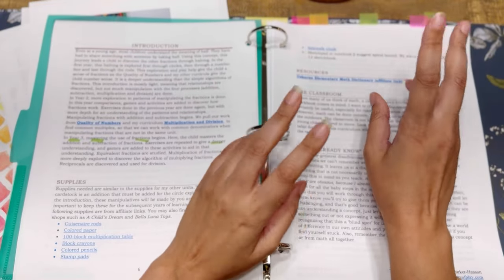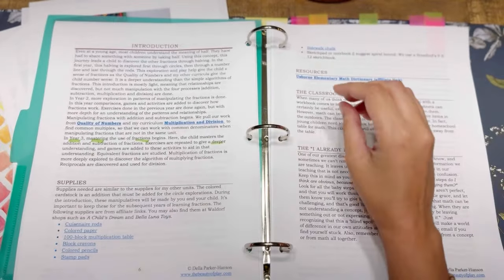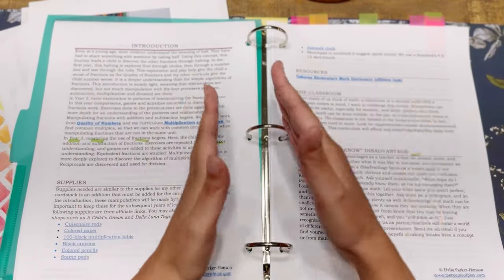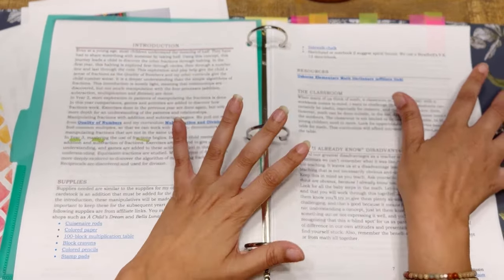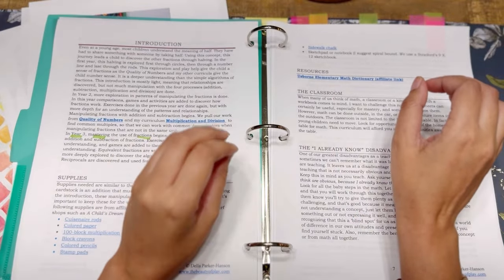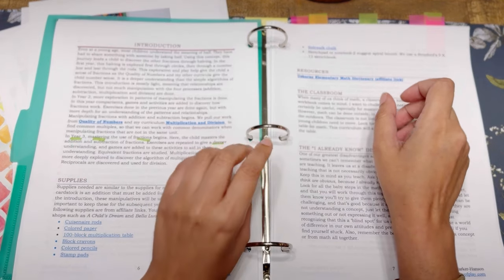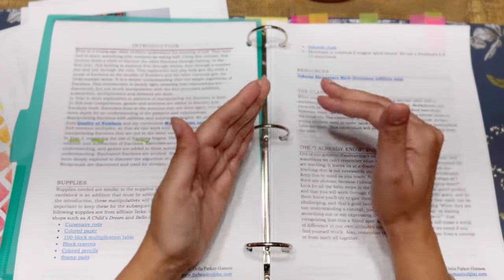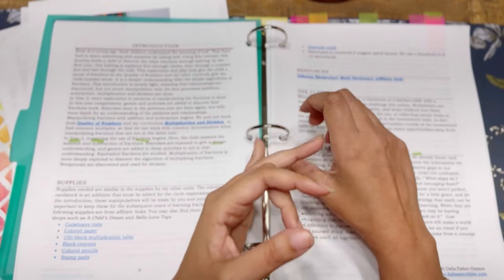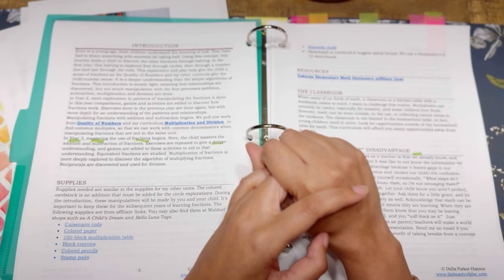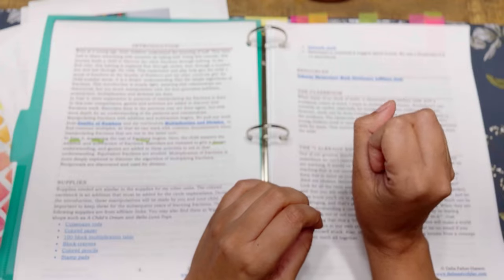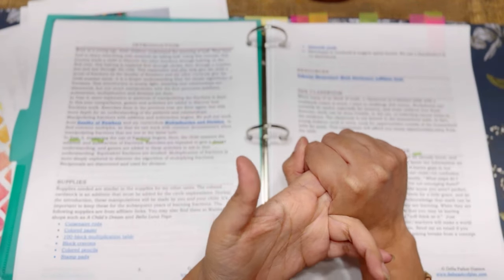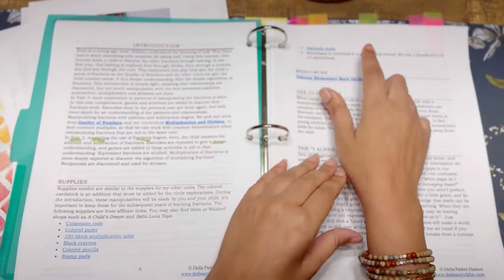One of the resources that she does recommend is the Osborne elementary math dictionary. Here is, as I started the video, the meaning of half, that is the first thing that one of the fraction concept that you learn early on. So in the first year, having is explored through circles, then through a number of lines and last through rods, the explorations play and help give a child a sense of fractions as the quality of numbers. In year three, you're mastering the fractions and you're going in deeper. There is some suggested supplies, but also you can use what you have. She does suggest Waldorf shops, like a child's dream and Bella Luna toys.